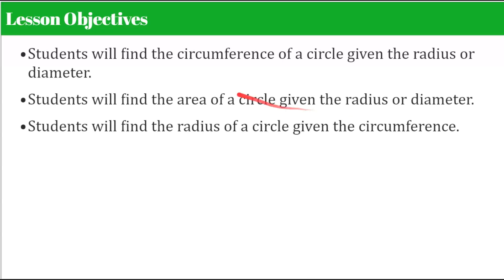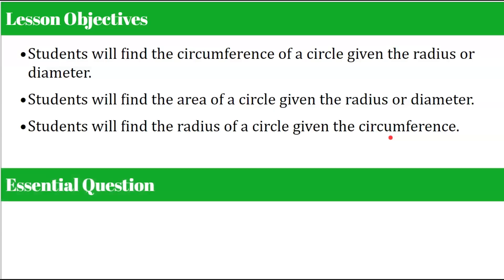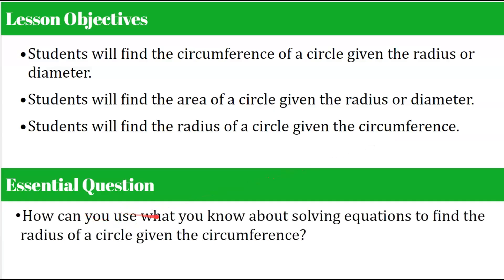Let's begin by understanding the objectives of today's lesson. You the student will find the circumference of a circle given the radius or diameter. You will also find the area of a circle given the radius or diameter, and you will find the radius of a circle when given the circumference. The guiding question: how can you use what you know about solving equations to find the radius of a circle given the circumference? We're going to bring in some review of solving an equation.